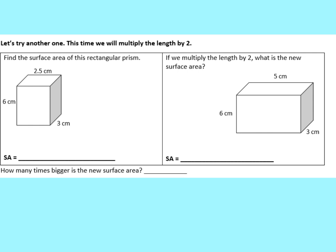Now try this one on your own. Find the surface area of both of these prisms — the first has given dimensions, and then they're multiplying the length by 2, so find the new surface area. Remember, it's not going to be an exact scale factor like we had with volume, so you have to calculate both surface areas and figure out how the formula is adjusted. Pause the video and try it on your own.